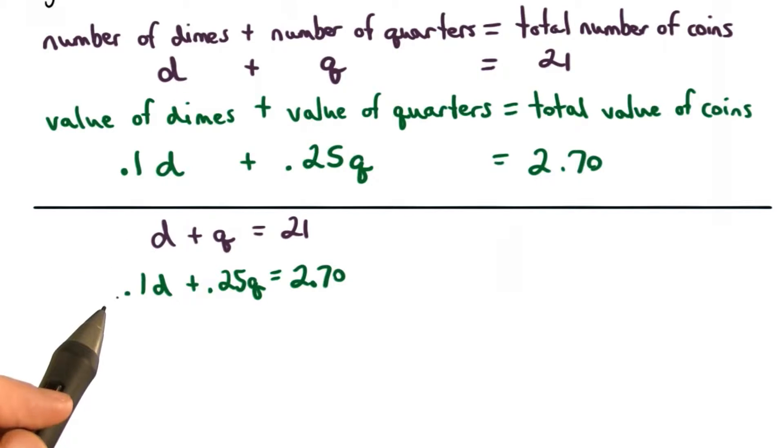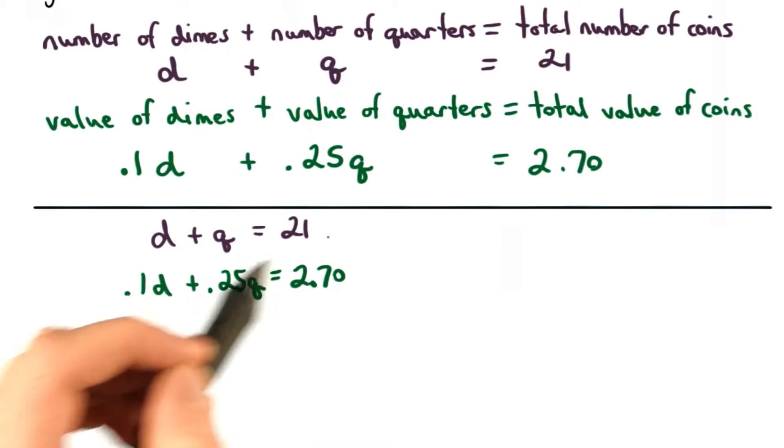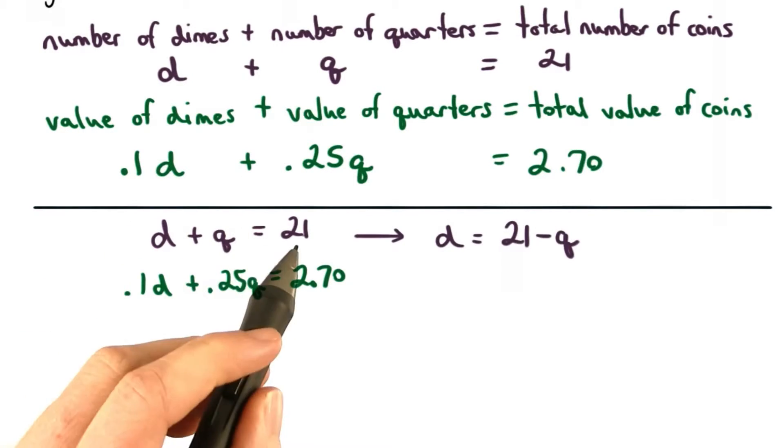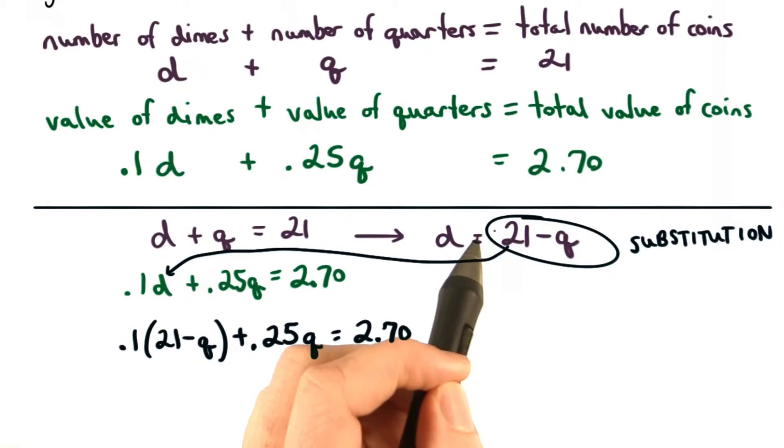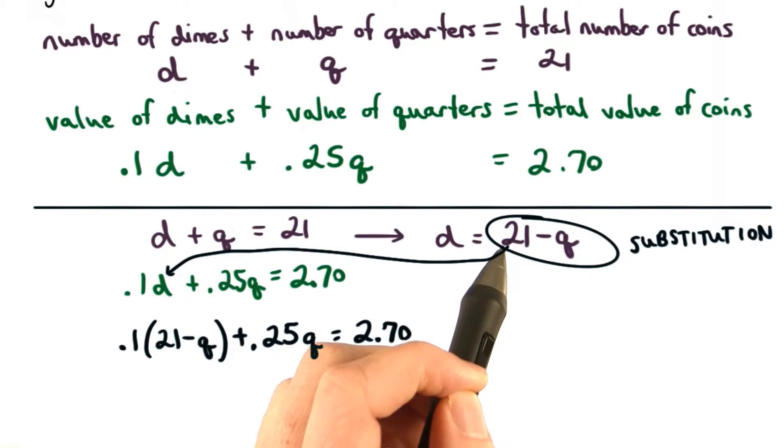I've rewritten the two equations down here, and now we can use either substitution or elimination to solve this problem. I'm going to use substitution since I can easily solve for one of the variables in this first equation. If we subtract q from both sides of this equation, we'll get d is equal to 21 minus q. Now that we have d solved for it, we can perform substitution and plug in 21 minus q for d in our second equation.